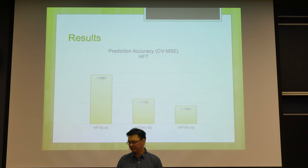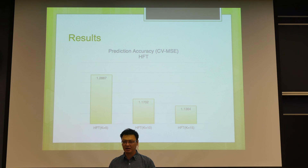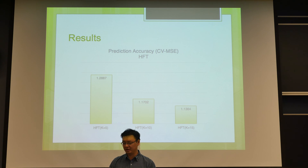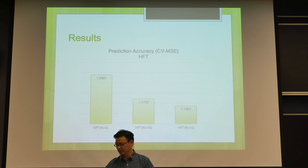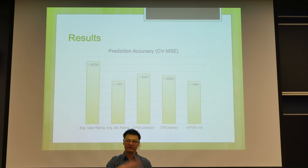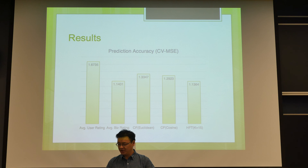For results, we first compared what happens when we change the number of topics in the HFT model. We see a huge improvement when increasing the number of topics from 5 to 10, but only a marginal improvement when further increasing to 15. We then picked the best-performing HFT model and compared it with the CF models, along with two benchmarks.